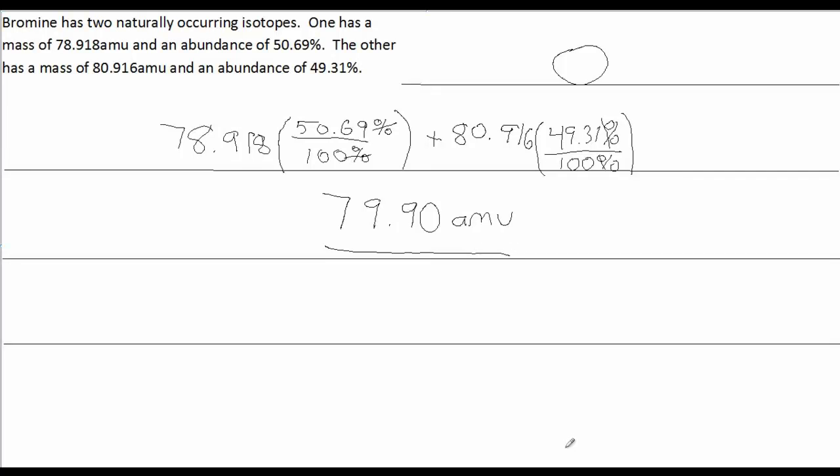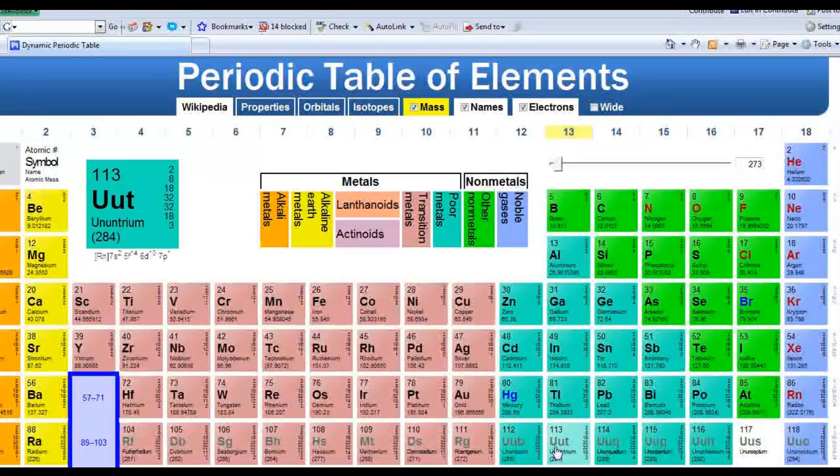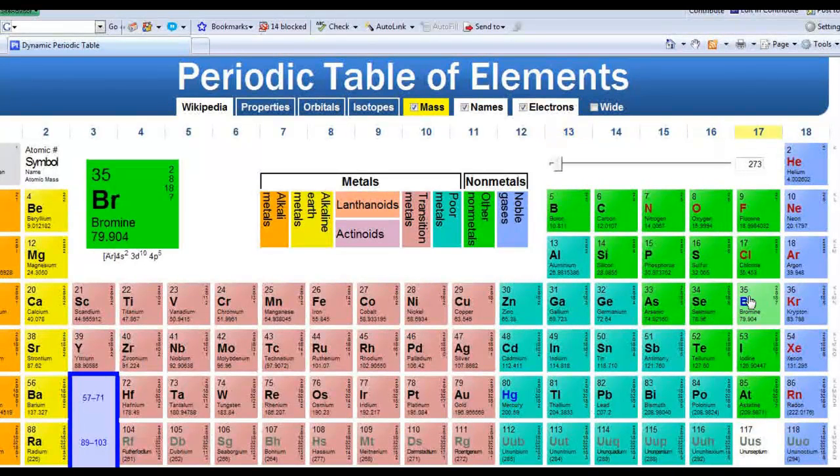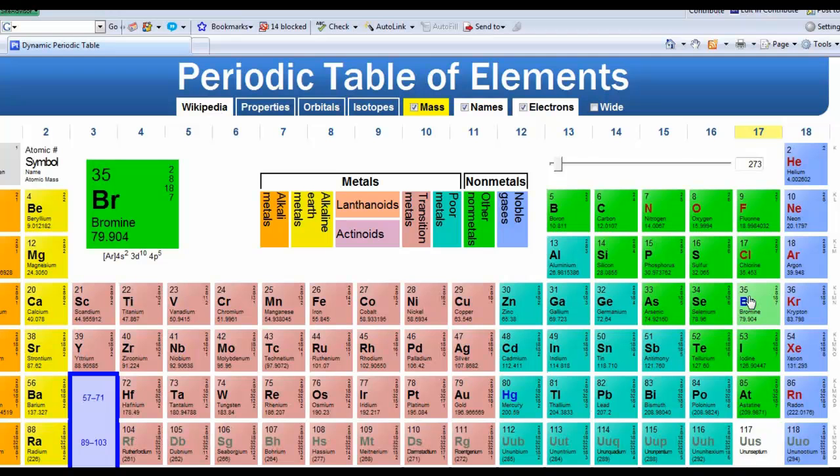If you look at the periodic table and look over here at bromine, we'll see bromine has an atomic weight of 79.904. We calculated it to be 79.90. Close enough.